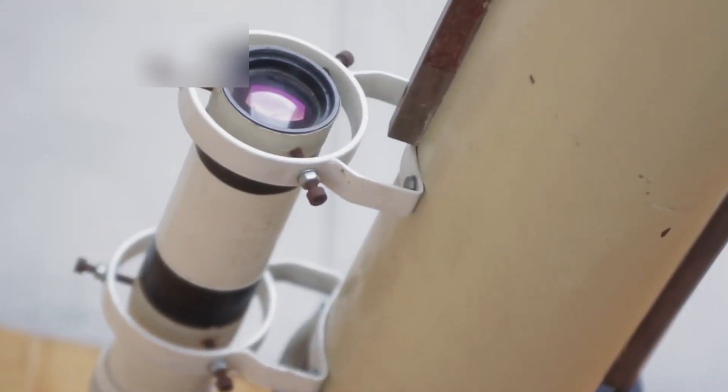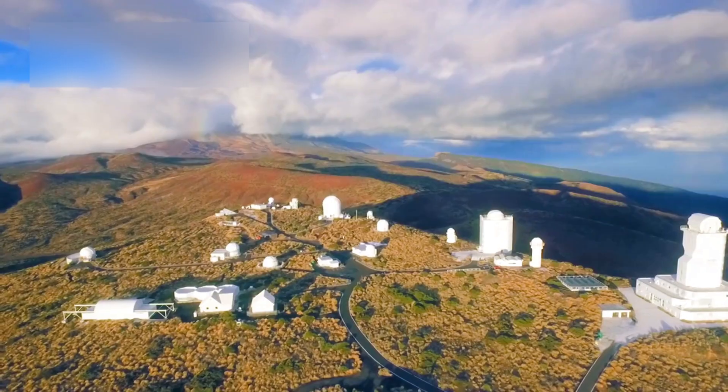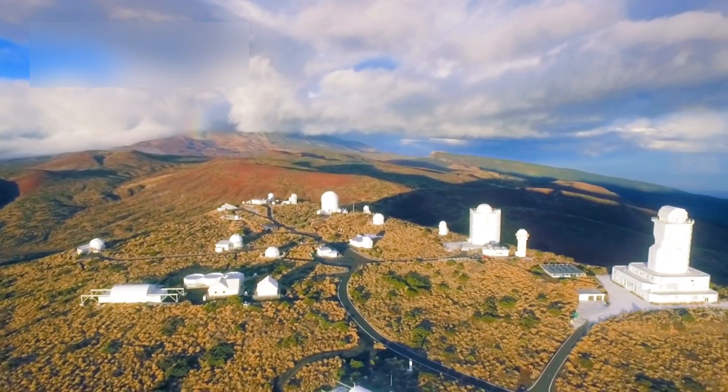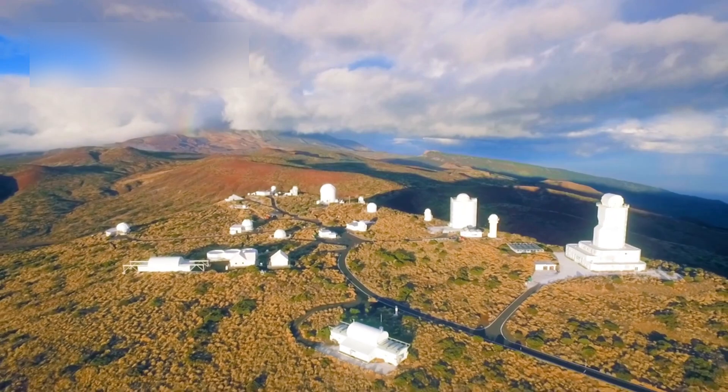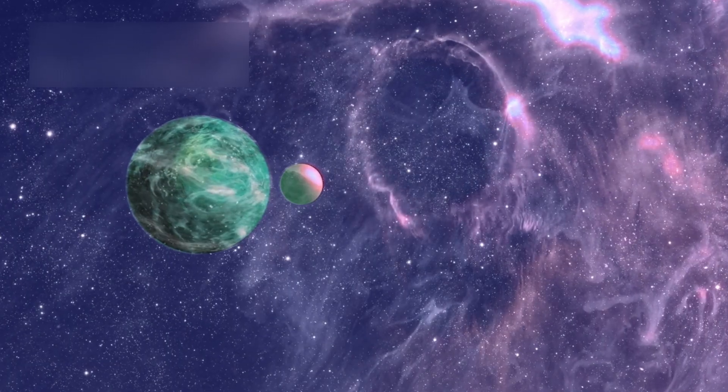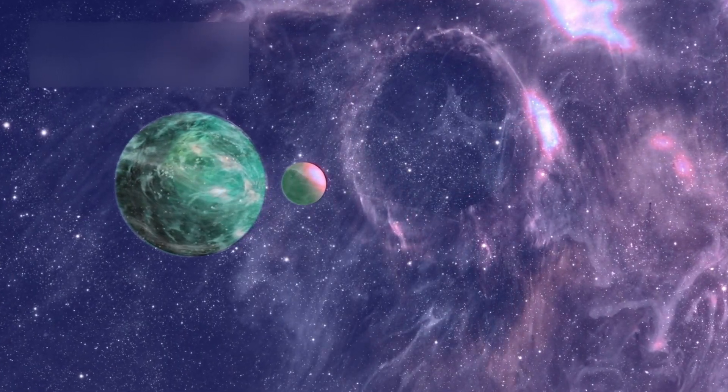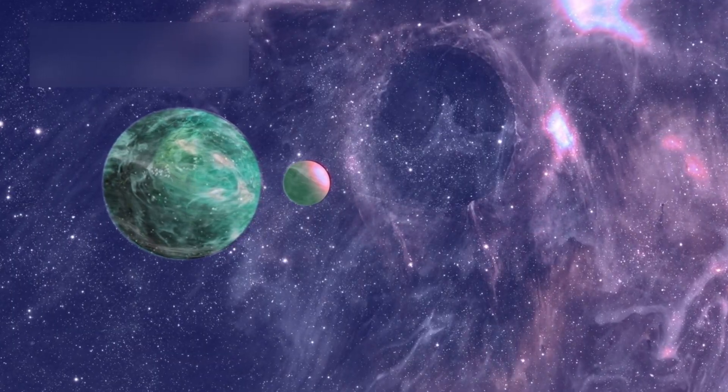Detecting such faint glows is itself a triumph of modern astronomy. For decades, planets orbiting distant stars remained invisible, overwhelmed by the overwhelming brilliance of their suns. A star can outshine its planets by billions of times, drowning them in a sea of light.